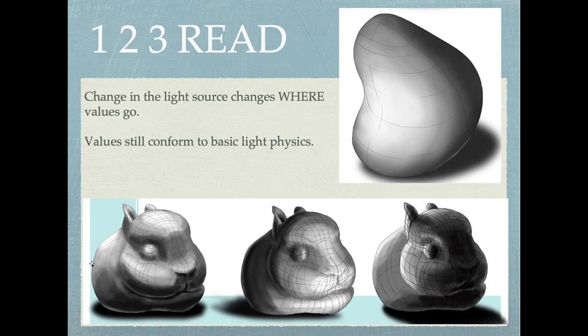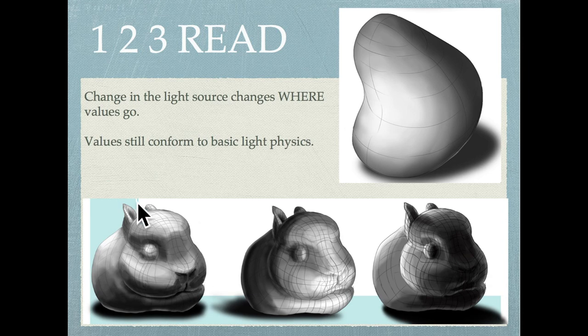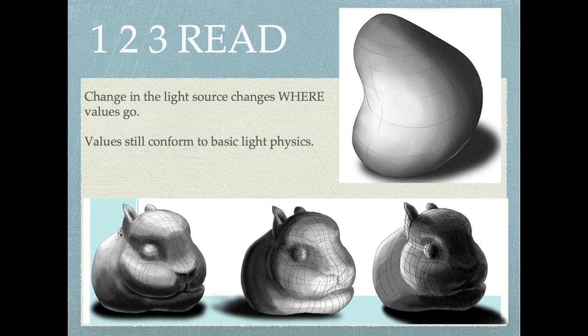If you change where the light source is, it changes where the values go. If we take this little grid of a bunny rabbit, you'll notice that we lit it from the above and left area, and so we've got, like, some light here on the left and on top and some shadows on the bottom.